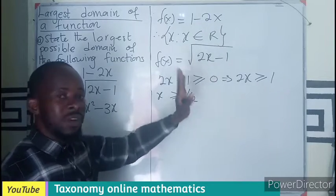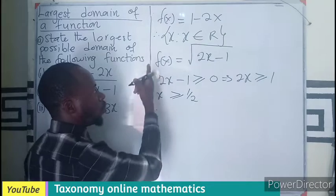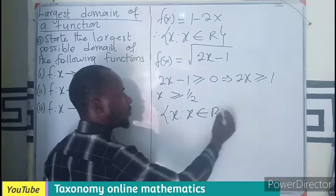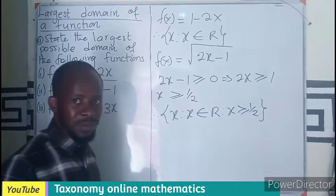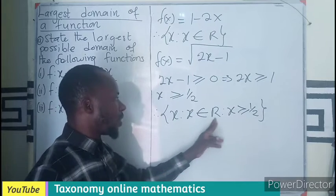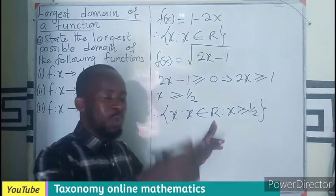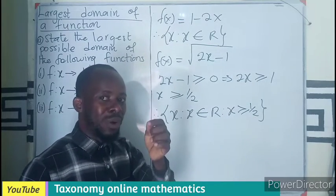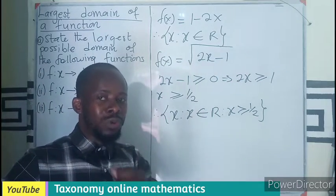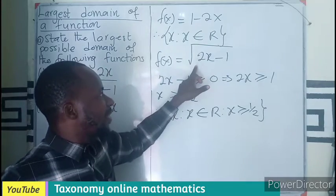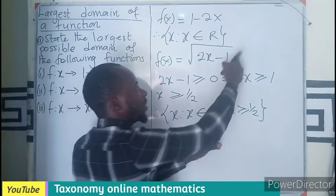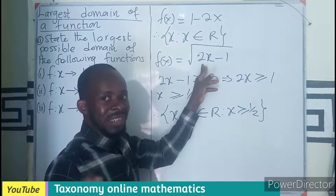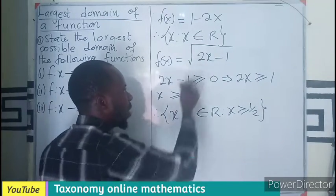All numbers above one-half will also give a valid solution. The domain is the set of x such that x belongs to all real numbers where x ≥ 1/2. We can also approach it by exclusion: the domain excludes all values of x that make the function undefined — that is, where 2x - 1 < 0, which makes the radicand negative and gives an undefined result.